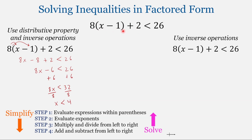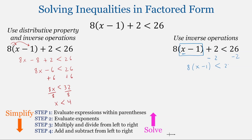We do not have to simplify the left side first. Instead, we can solve this inequality using order of operations in reverse. Our unknown variable is inside a set of parentheses, so we're going to get that set of parentheses all by itself on one side and everything else on the other. Treat the parentheses like an unknown variable. Right now, 2 is added to that set of parentheses, so we're going to subtract 2 from both sides, giving us 8 times the quantity x minus 1, less than 24.